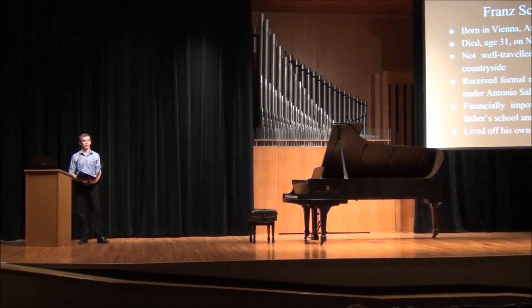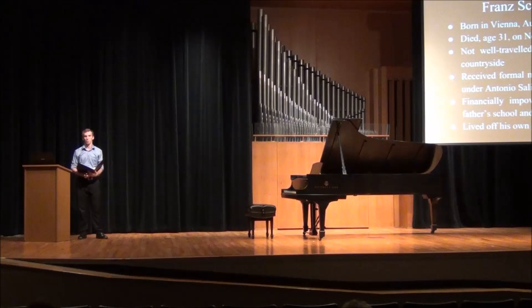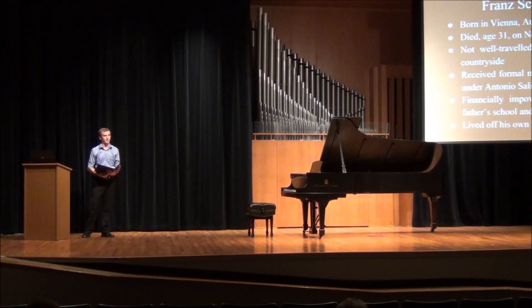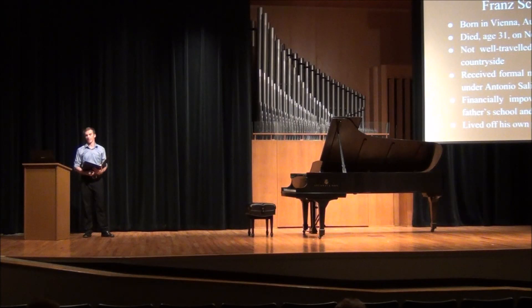First I would like to give a brief introduction of the composer. Franz Schubert was born in Vienna, Austria on January 31, 1797, and died at age 31 on November 19, 1828. He was not well traveled — he spent most of his life in Vienna, though he did occasionally visit the Hungarian countryside and a few places in Austria. He received formal music education in Vienna and also studied under Antonio Salieri, who was an authoritative figure of music at the time.